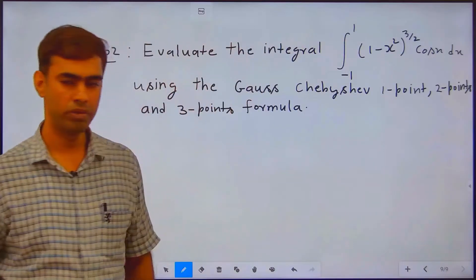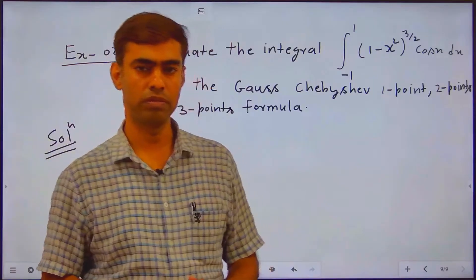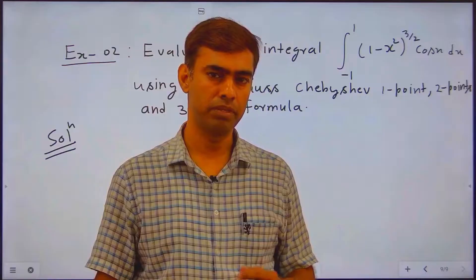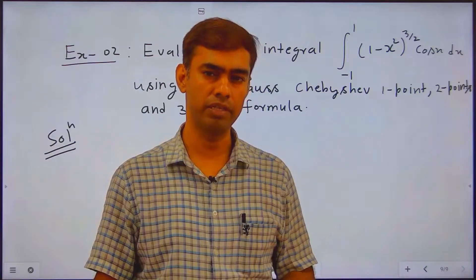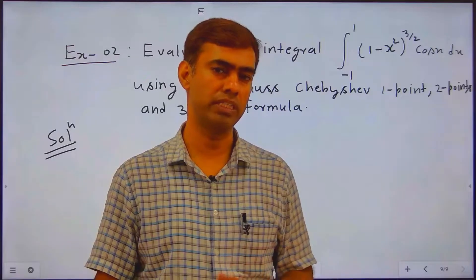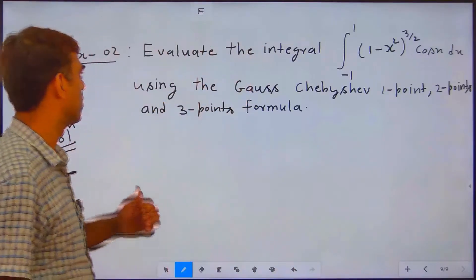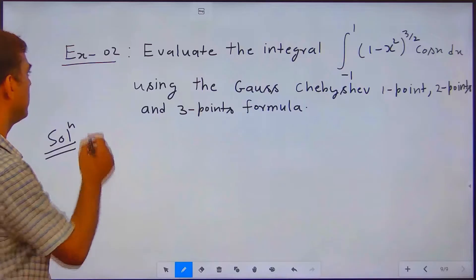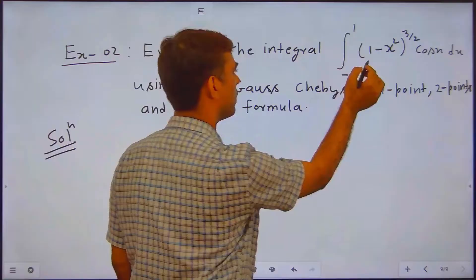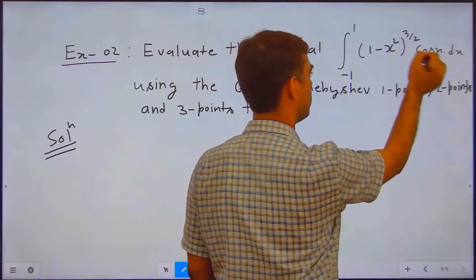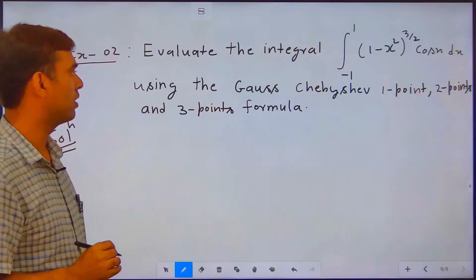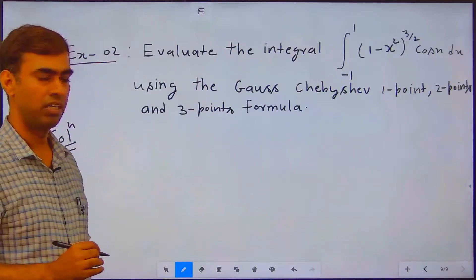Now we try to solve one numerical problem: numerical integration with the help of a Gauss-Chebyshev formula — 1-point, 2-point, and 3-point formula. The problem is: evaluate the integral from minus 1 to 1 of (1 minus x squared)^(3/2) cos(x) dx using the Gauss-Chebyshev 1-point, 2-point, and 3-point formula.